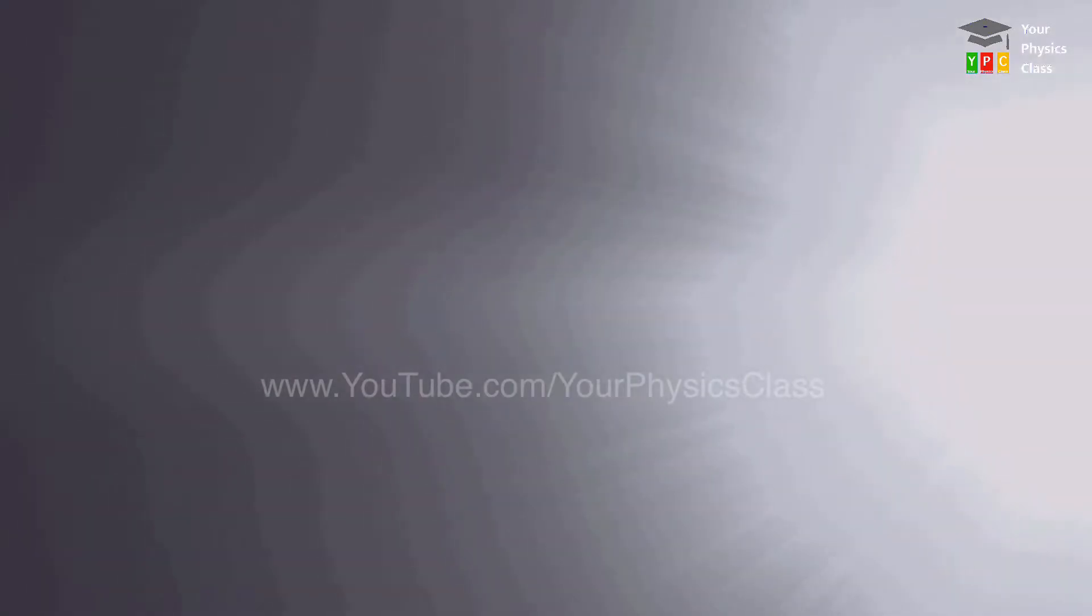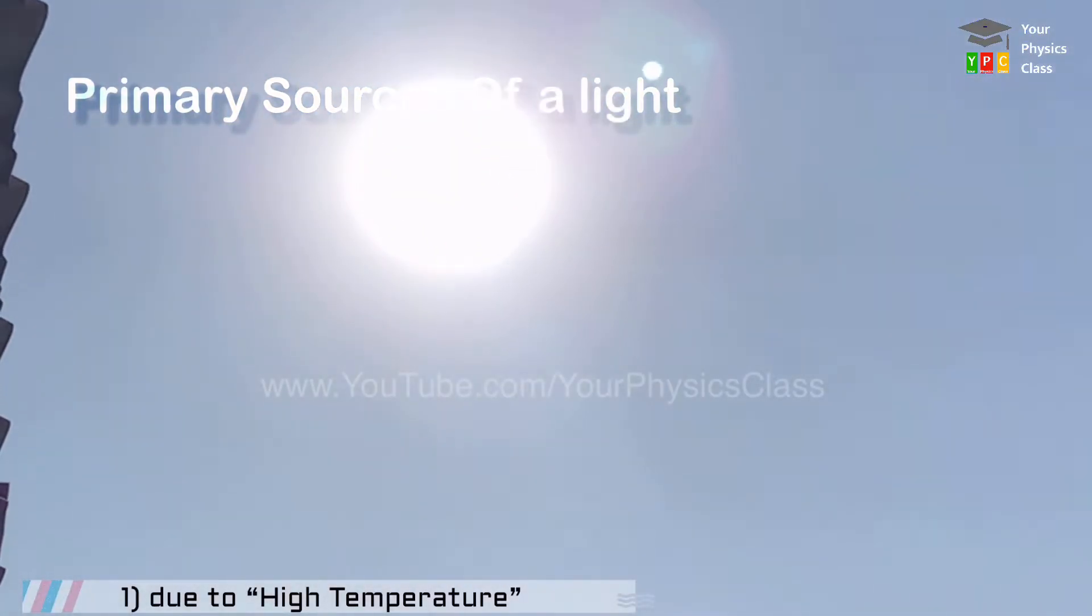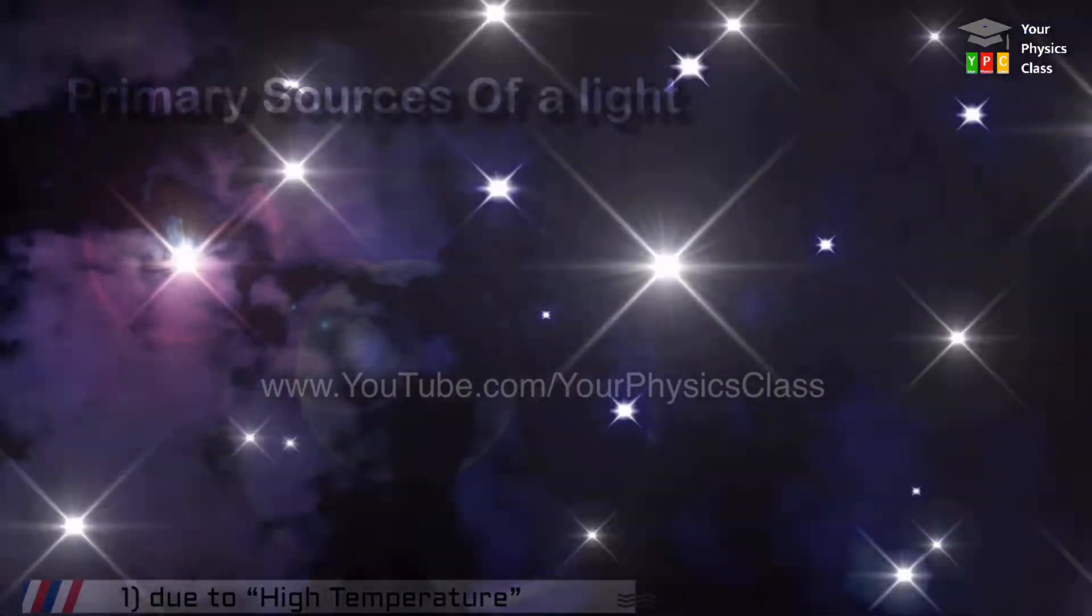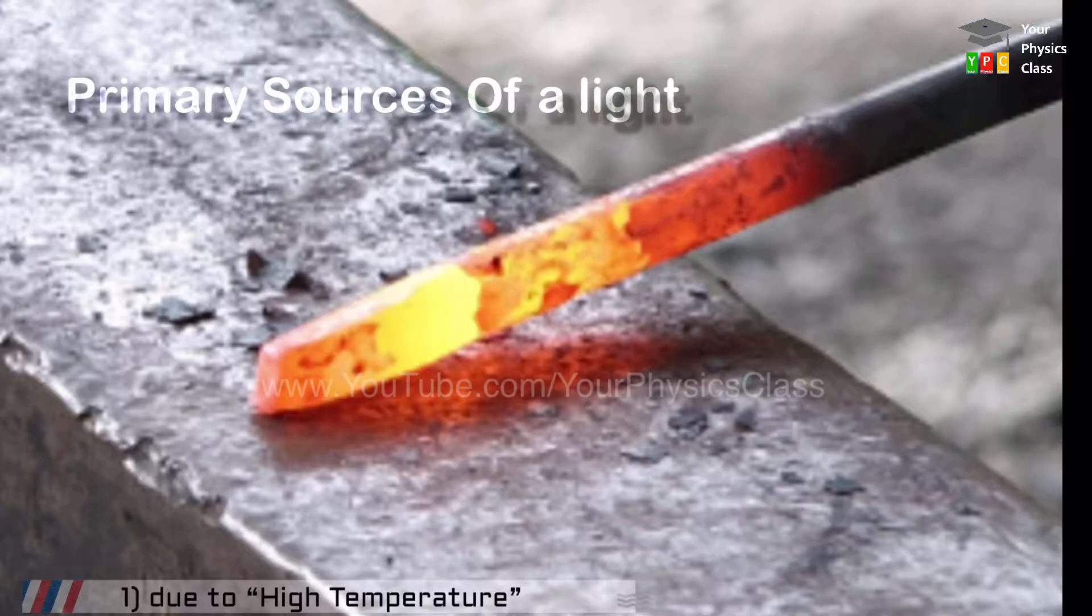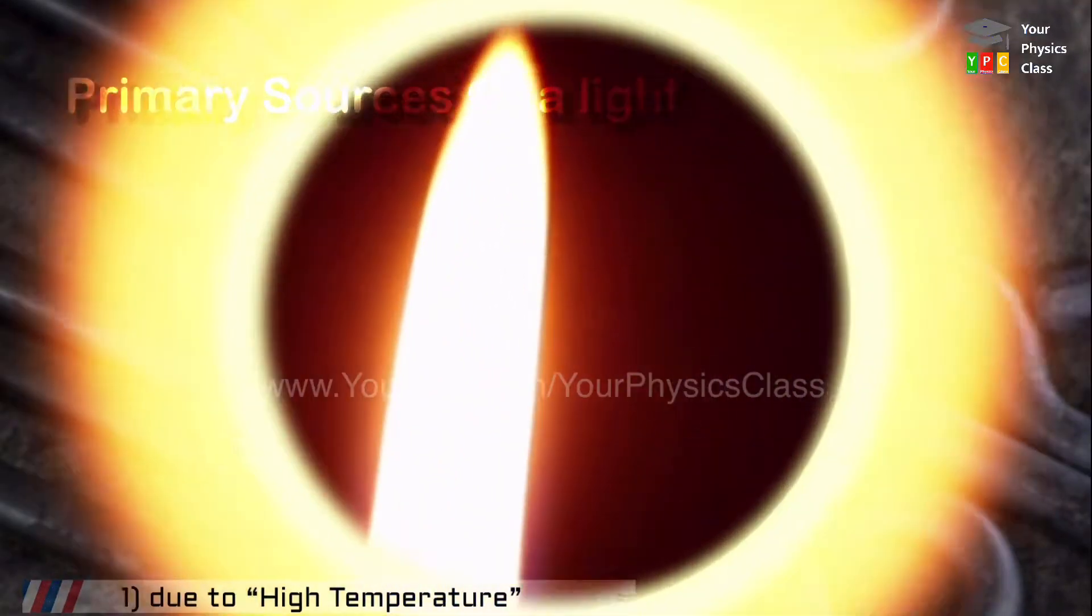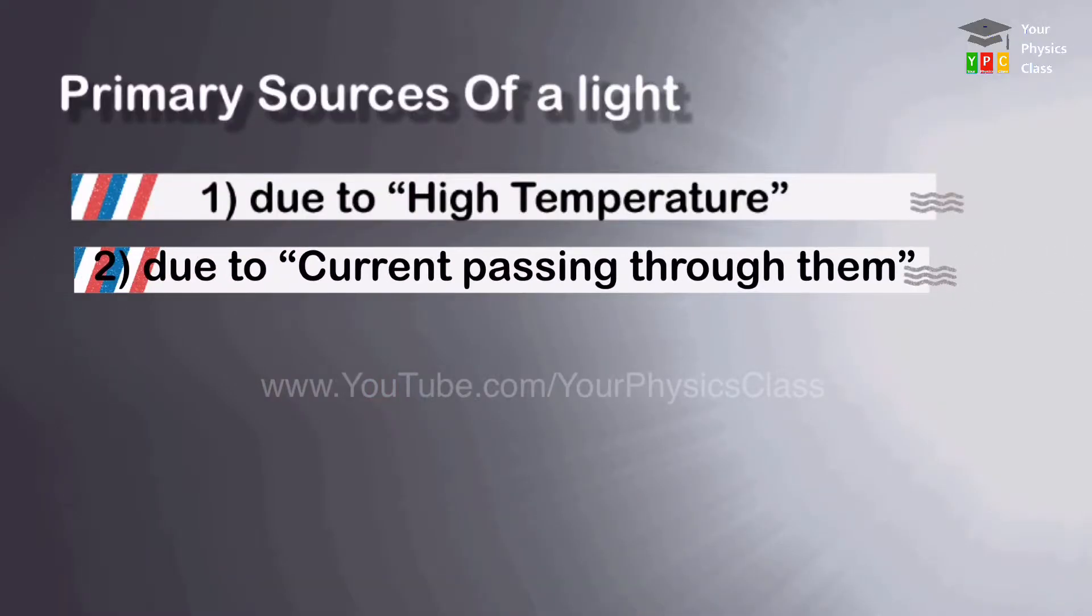The primary sources emit light due to extremely high temperature. For example, Sun, stars, or any object heated to very high temperature emits light can be treated as primary source of light. The second cause of emission of light is the current passing through them.